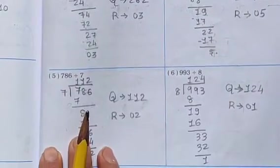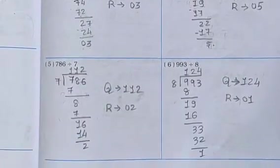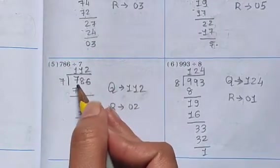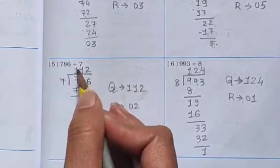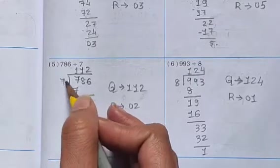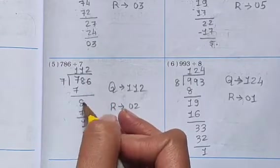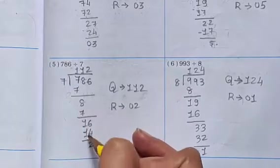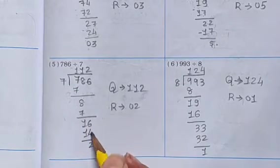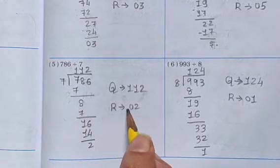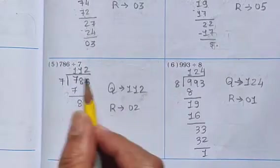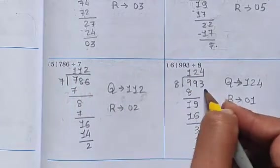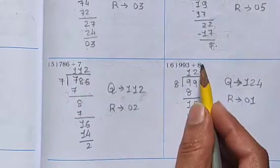Same type — question number five. Three digit number divided by seven. Seven eights are fifty six — put seven one. Eight minus seven is one, bring down six — sixteen. Seven twos are fourteen. Sixteen minus fourteen is two. The remainder is two and the answer is one hundred twelve.